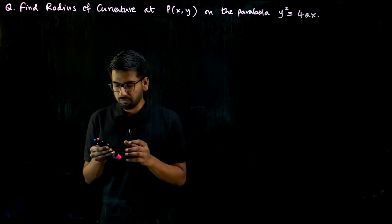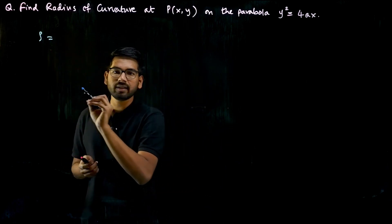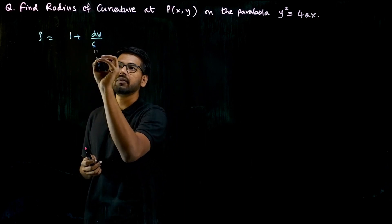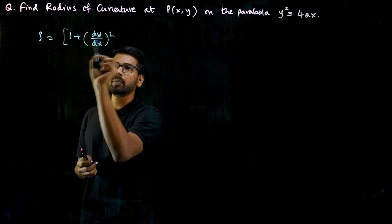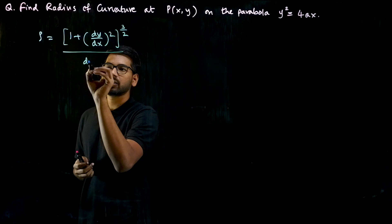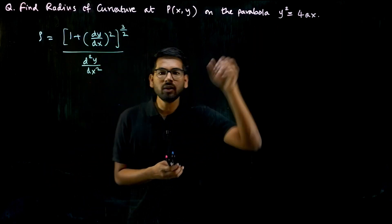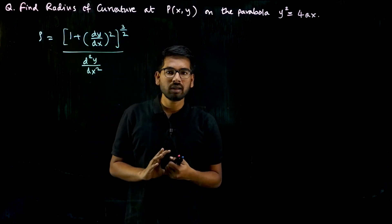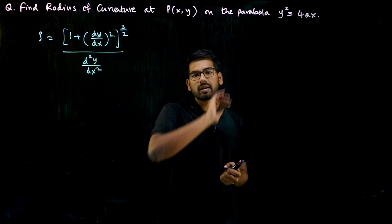What is the radius of curvature formula? Rho is the radius of curvature, and rho equals (1 + (dy/dx)²)^(3/2) divided by d²y/dx². For the given y, we need to find dy/dx and d²y/dx² and substitute them in this formula to get the radius of curvature for this parabola.